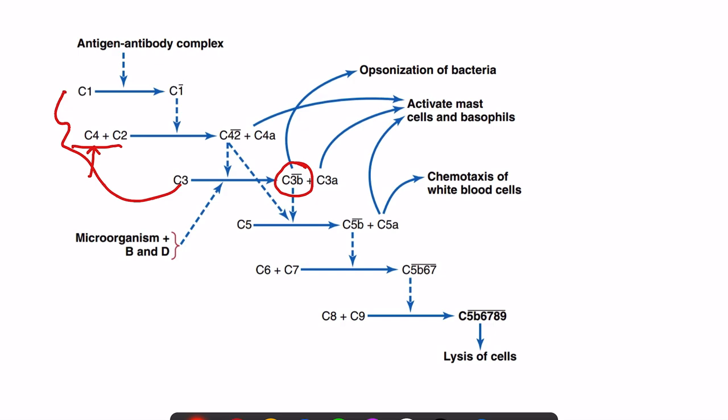C3B is the central point because it is only active when attached to the surface of the microorganism; otherwise it is destroyed by Factor H and Factor I. When C3B is attached to the microbial surface and further reactions take place, the downstream complement components also form on the surface of the microorganism.